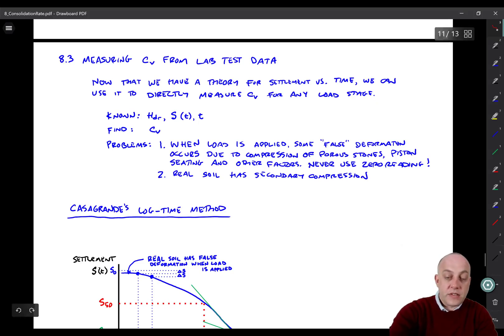What we assume we know is the drainage path length for the laboratory test, because we know how thick the specimen is and whether it's double-drained or single-drained. We know settlement versus time and we know time. So when you apply the load, you have to start the clock. What we want to find is C sub V. And using consolidation theory, we will also get A sub V, the coefficient of compression or compressibility, and then hydraulic conductivity too.